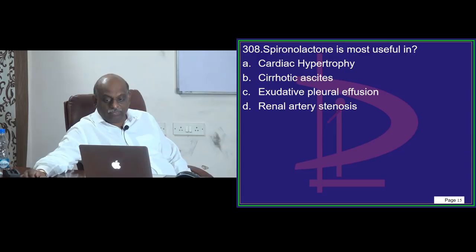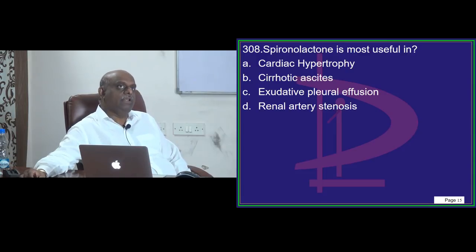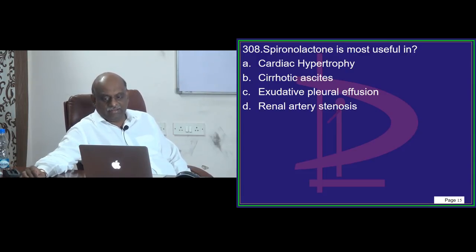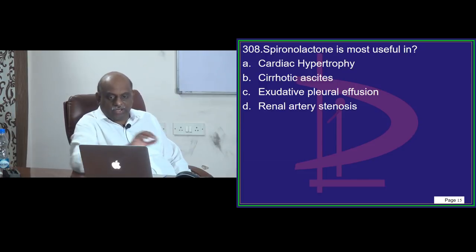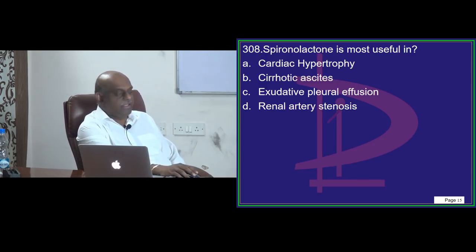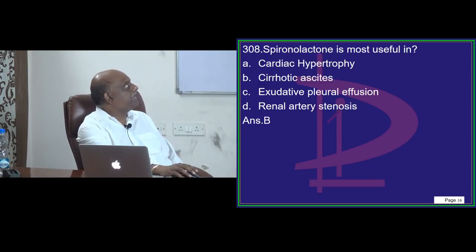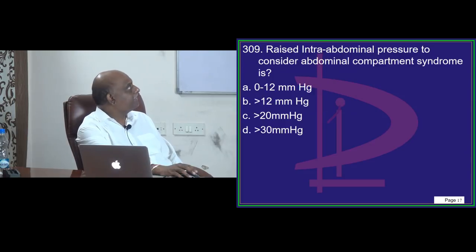Even before envelope antigen, IgM is much earlier. Nitesh Kulkarni, everyone is saying chronic ascites, cirrhotic ascites — absolutely right. That is where spironolactone is most useful — question 308.